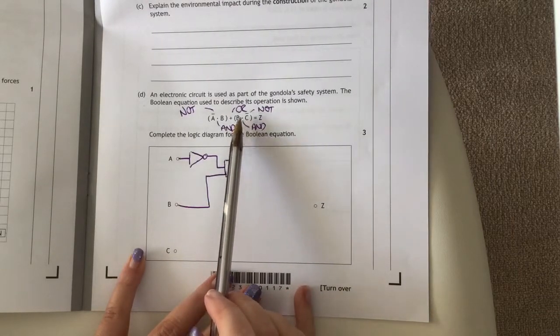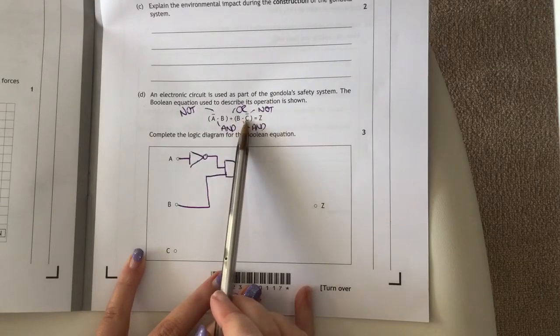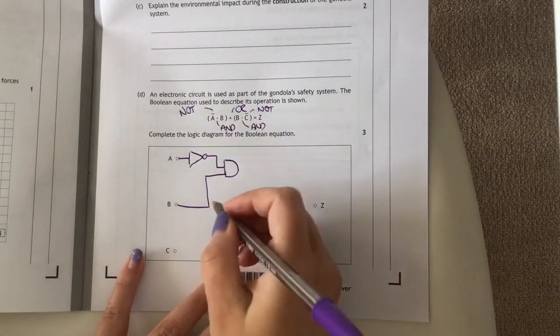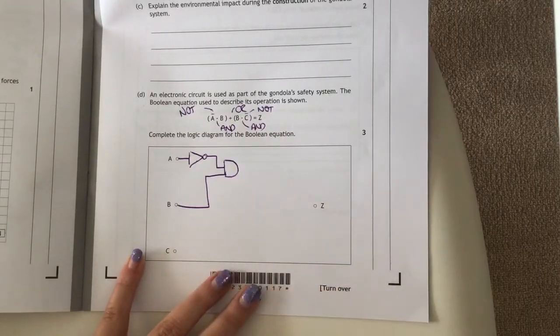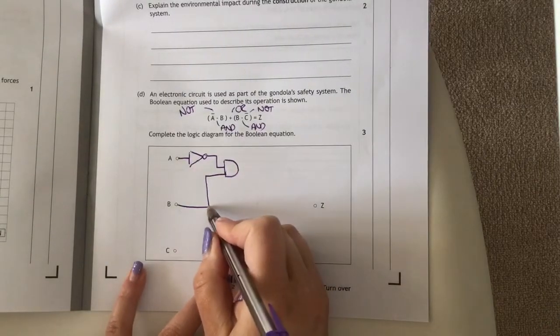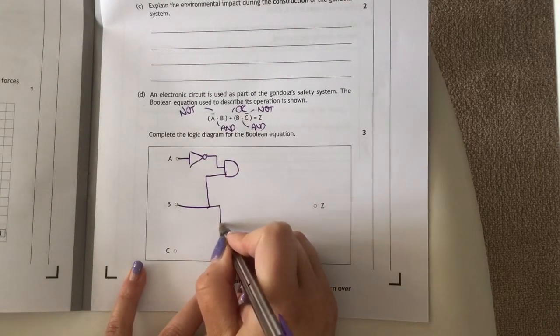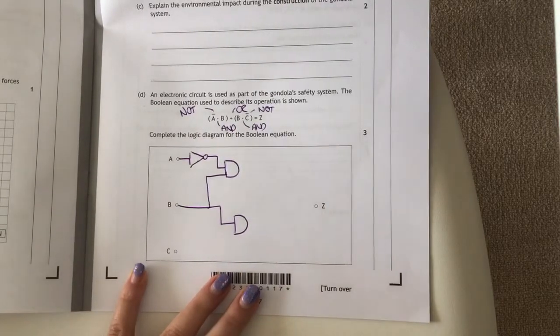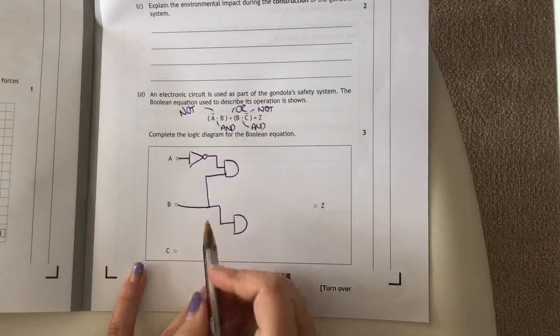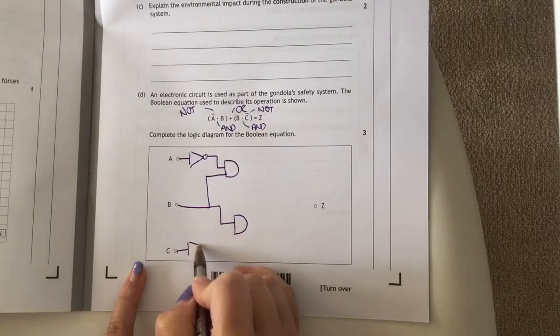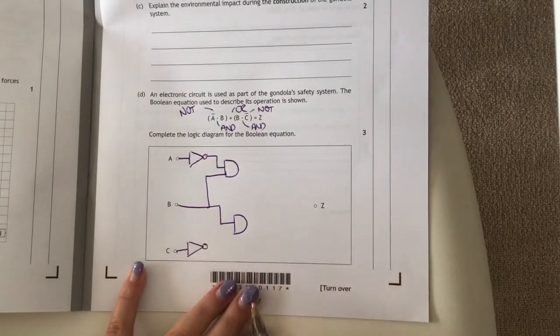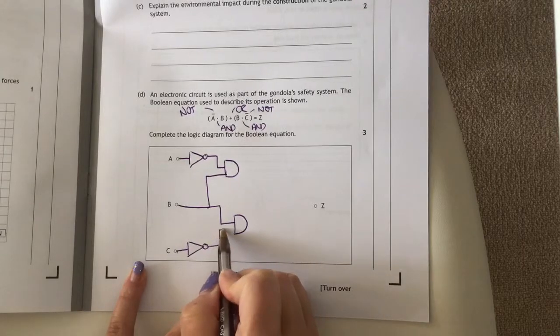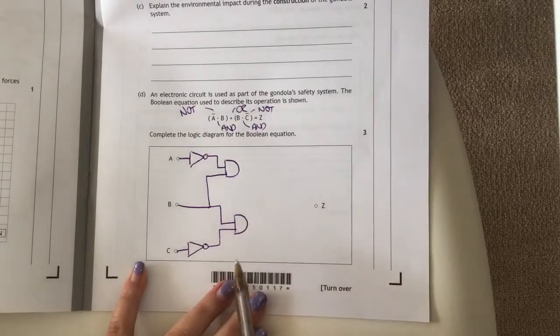The next set of brackets I've got is B and NOT C. My B can just come from here again, so I can have a second line coming from here and have my B going into an AND gate. I've then got NOT C, so this time I want to have a NOT gate at C and make sure that then goes into the second AND gate.